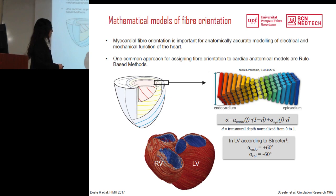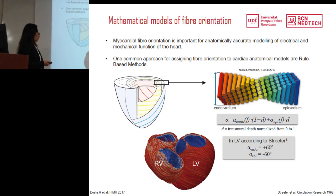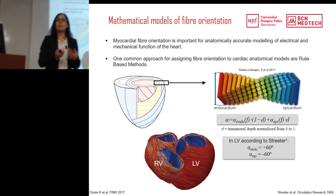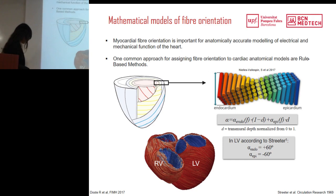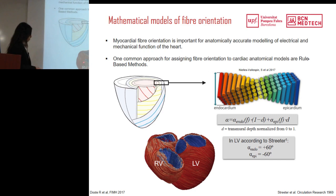Most models only define fiber orientation in the left ventricle, but what happens with the right ventricle and the outflow tracts? Ruben Doste, another PhD student at Pompeu Fabra, is currently using histological images from post-mortem hearts to define equations describing fiber orientation that also take into account the right ventricle and outflow tracts.